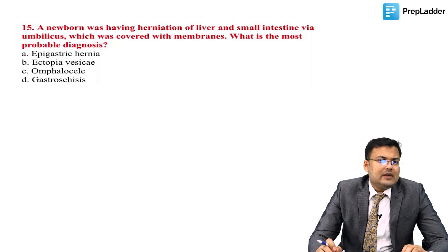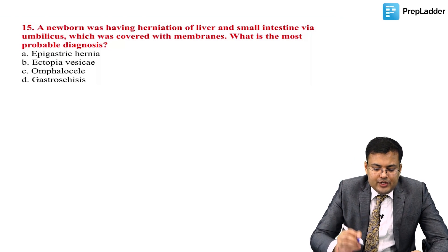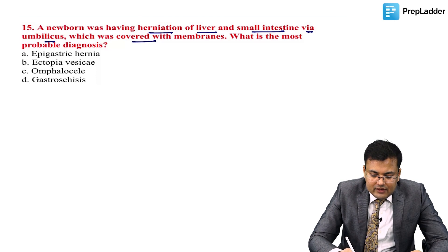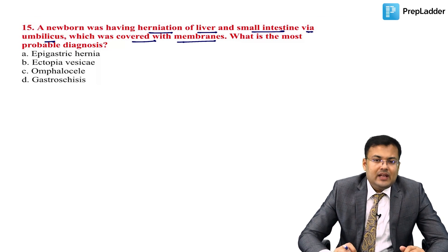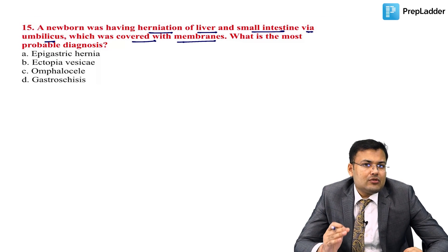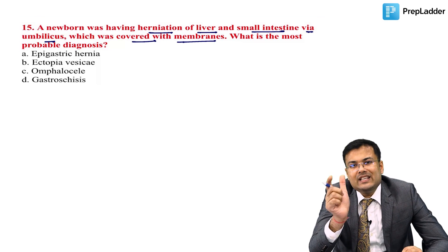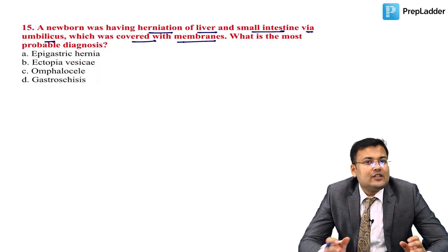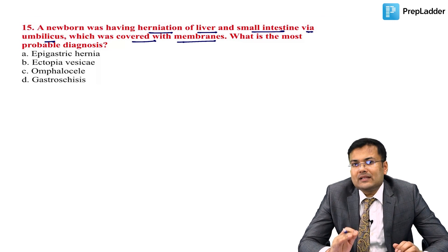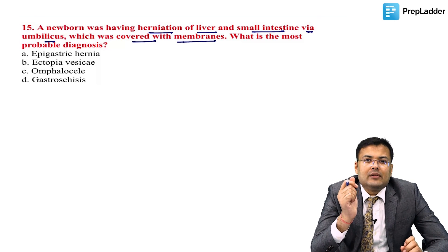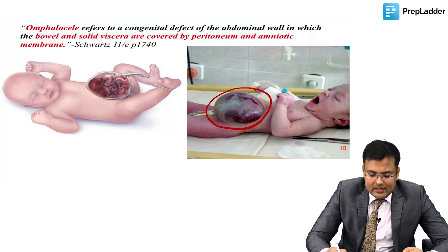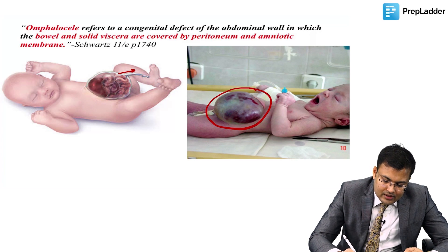Next question: newborn with herniation of liver and small intestine via the umbilicus, covered with membranes. Gastroschisis occurs on the right side of the umbilicus with exposed, uncovered bowel. Omphalocele (exomphalos) involves bowel, liver, and viscera herniated via the umbilicus and covered by peritoneum and amnion. The correct answer is omphalocele (exomphalos).